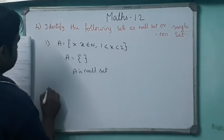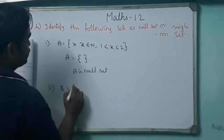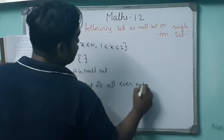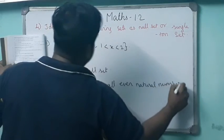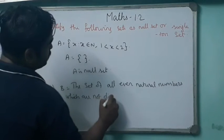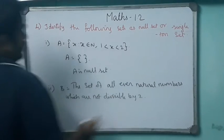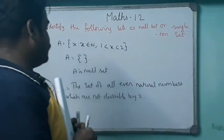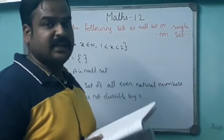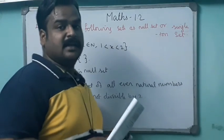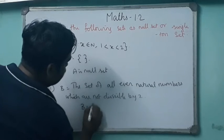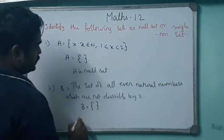Second: set B equals the set of all even natural numbers which are not divisible by 2. Every even number is divisible by 2 by definition, so there are no such elements. Set B equals empty set — null set.